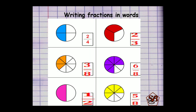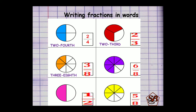Here are the fractions and we have to write them in words. The first one is 2 by 4, written as 2 fourths. 2 by 3 will be written as 2 thirds. 3 by 8 will be written as 3 eighths. 6 by 8 will be written as 6 eighths. 1 by 2 will always be written as 1 half. 5 by 8 will be written as 5 eighths.